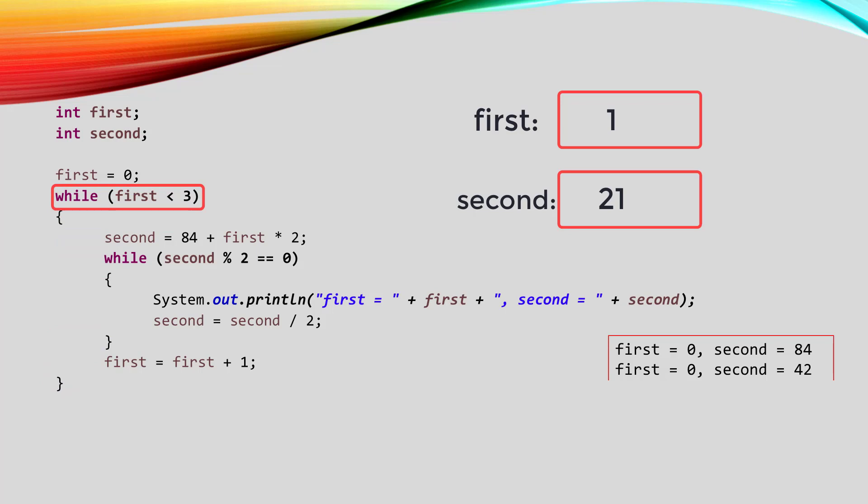It checks to see if first is less than three. Since that is true, we go inside the loop again. This time, when it goes to calculate the value of second, it'll take first times two, that's two, and add it to 84, and get 86, and it'll store that in second.